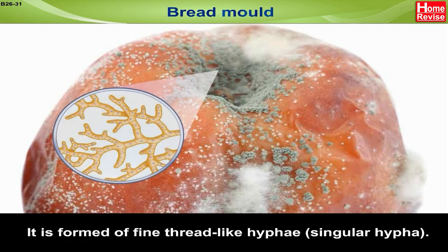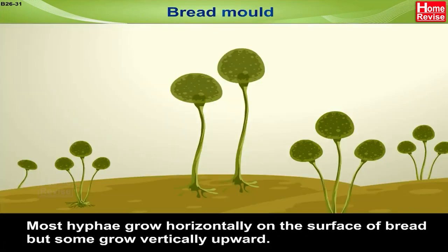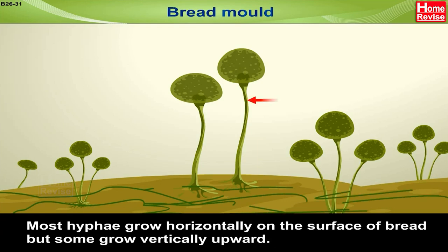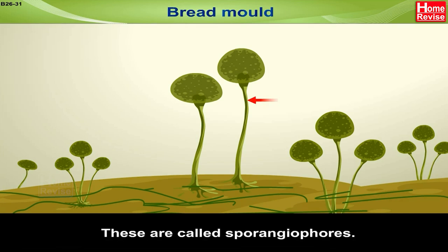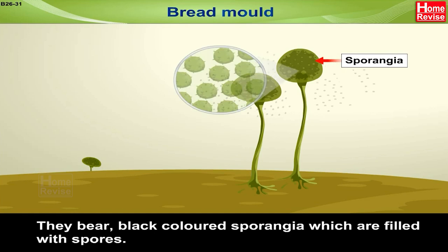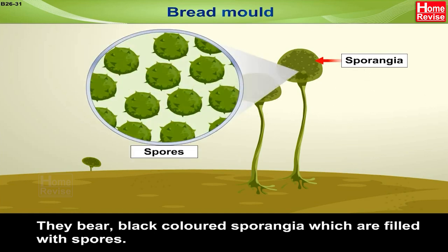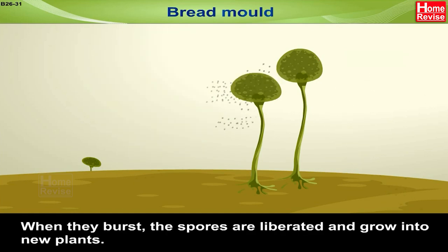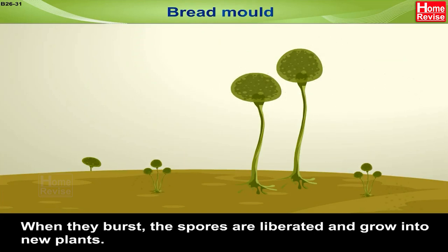Mycelium is formed of fine thread-like hyphae (singular: hypha). Most hyphae grow horizontally on the surface of bread, but some grow vertically upward — these are called sporangiophores. They bear black-colored sporangia which are filled with spores. When they burst, the spores are liberated and grow into new plants.